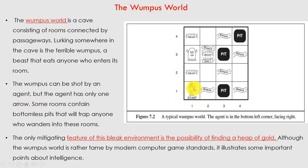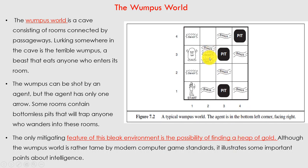The agent has only one arrow and must use it to kill the Wumpus. Some rooms contain bottomless pits that will trap anyone who wanders into them. The only positive feature of this dark environment is the possibility of finding a heap of gold — we have to find this heap of gold, and that is the goal of the game. Although the Wumpus world is rather tame by modern computer game standards, it illustrates some important points about intelligence.